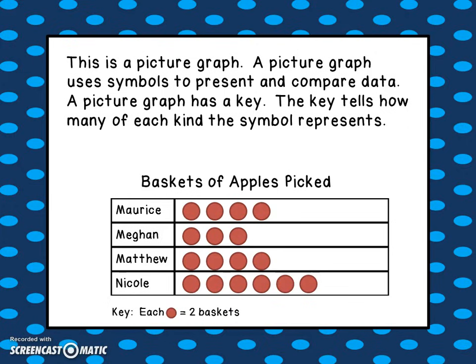This graph is called Baskets of Apples Picked. We have Maurice, Megan, Matthew, and Nicole, and they each recorded how many baskets they picked. Next to Maurice, you see four red circles. You might think Maurice picked four baskets of apples, but the key tells you each circle is worth two baskets. So in reality, Maurice picked two, four, six, eight baskets.